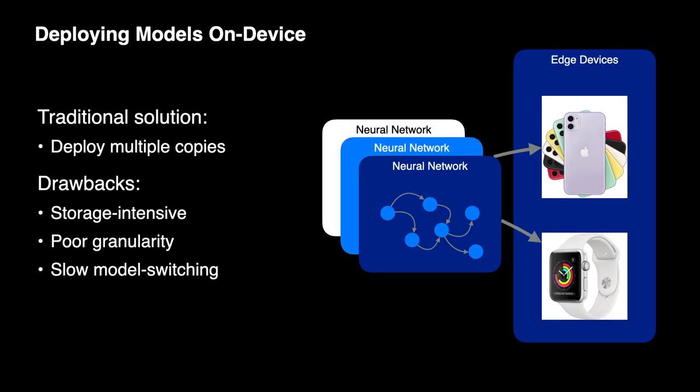One way of constructing this adaptive framework is by deploying multiple compressed versions of a model onto a device, but this has a few drawbacks. First, storing each model version induces significant storage overhead and may be infeasible for devices with limited memory. Moreover, the optimal model for the given resource constraints may not be available, and finally, switching between models can be slow.